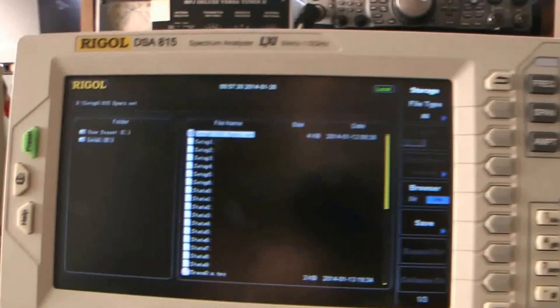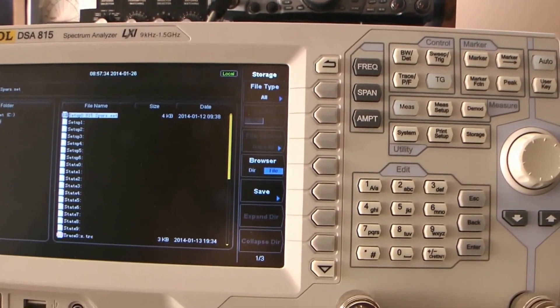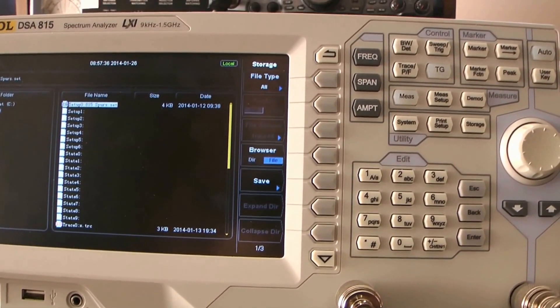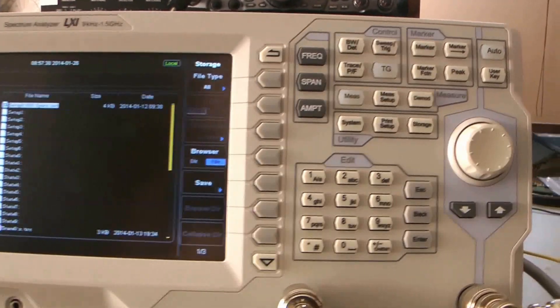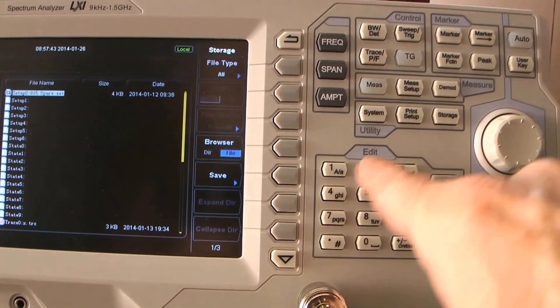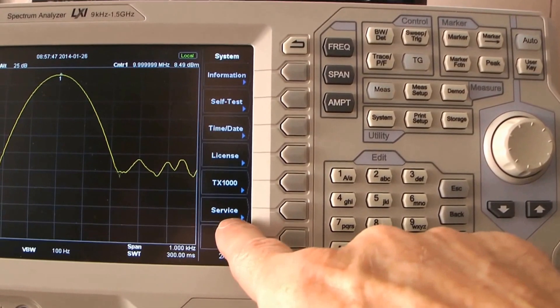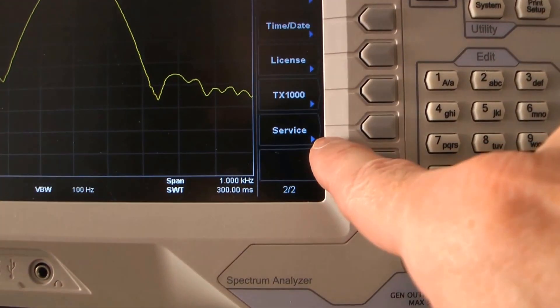Then you get the little message that says you're going into that mode. Now what's not clear in the documentation is it says push the down arrow. That is not this down arrow. They mean the second page of menu, so you go to system, second page of menu.